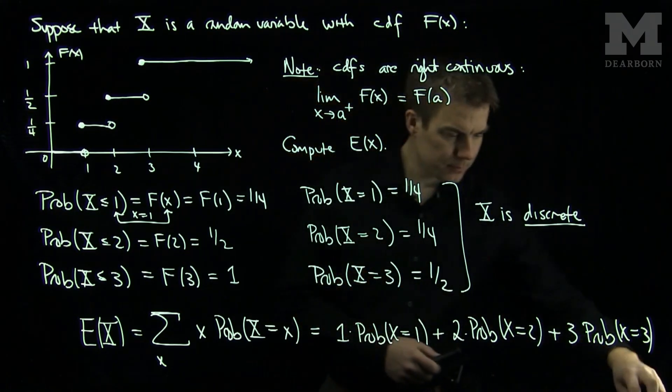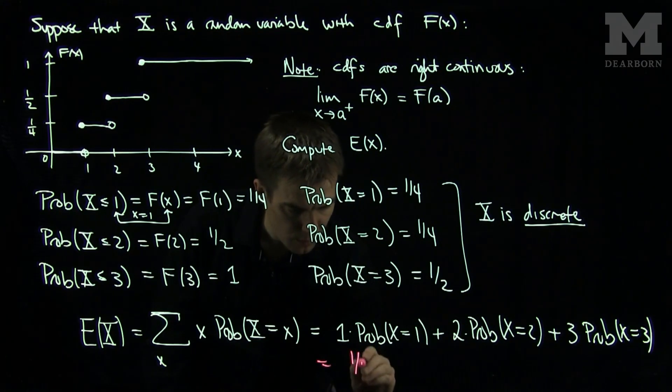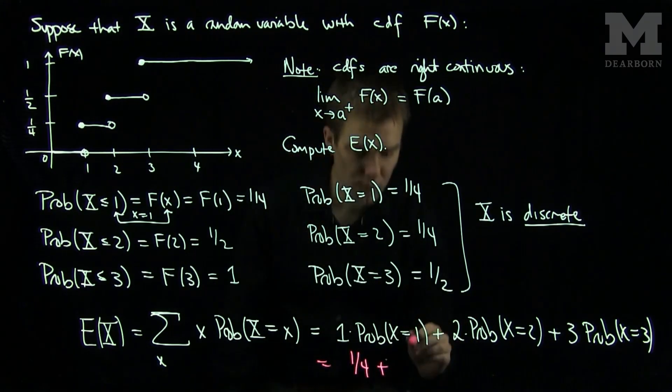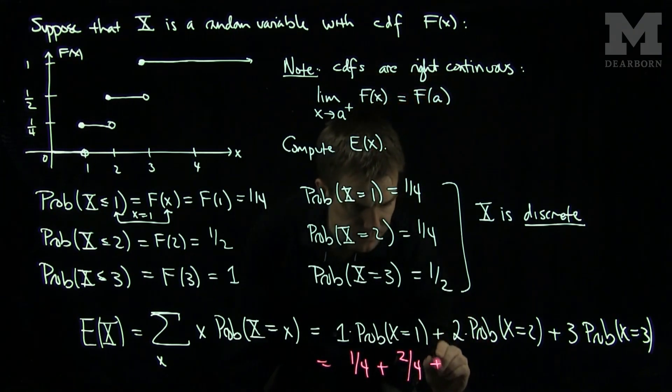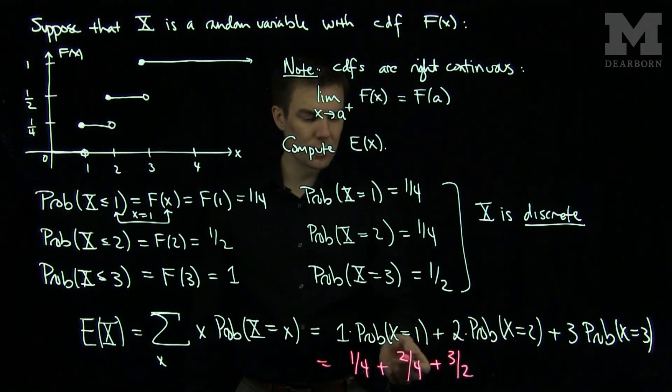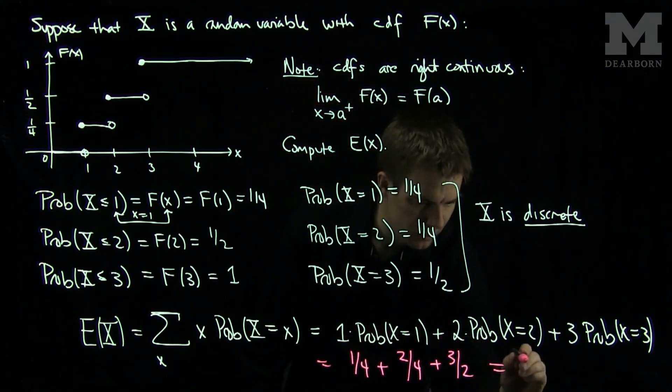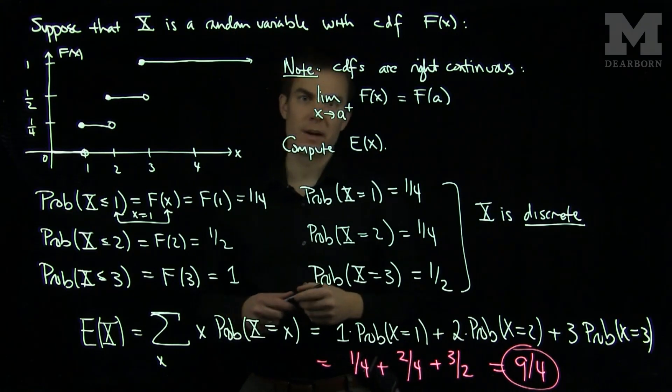Now this is 1/4, so this is going to be 1/4. This is going to be 1/4, and this is going to be 3/4. And that is the expected value of this random variable.